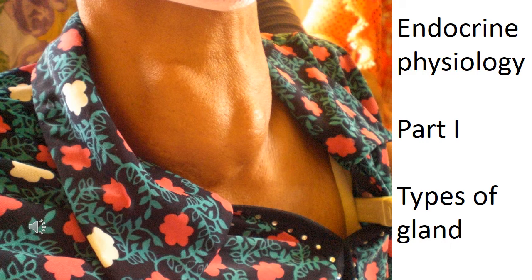Some exocrine glands are described as unicellular, meaning the gland is composed of just one single cell, whereas other exocrine glands are multicellular — more complex structures with a duct to deposit their product onto some internal or external body surface.